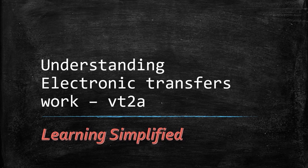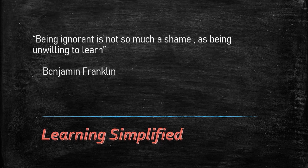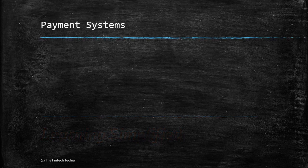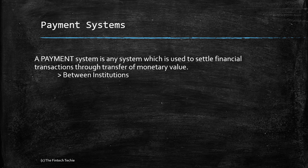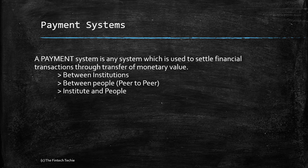Welcome back to the Learning Simplified series. Today we are going to understand how electronic transfers work. First, let us try to understand what a payment system is. A payment system is any system used to settle financial transactions through transfer of monetary value — it could be between two financial institutions, between two people peer-to-peer, or between an institution and a person.